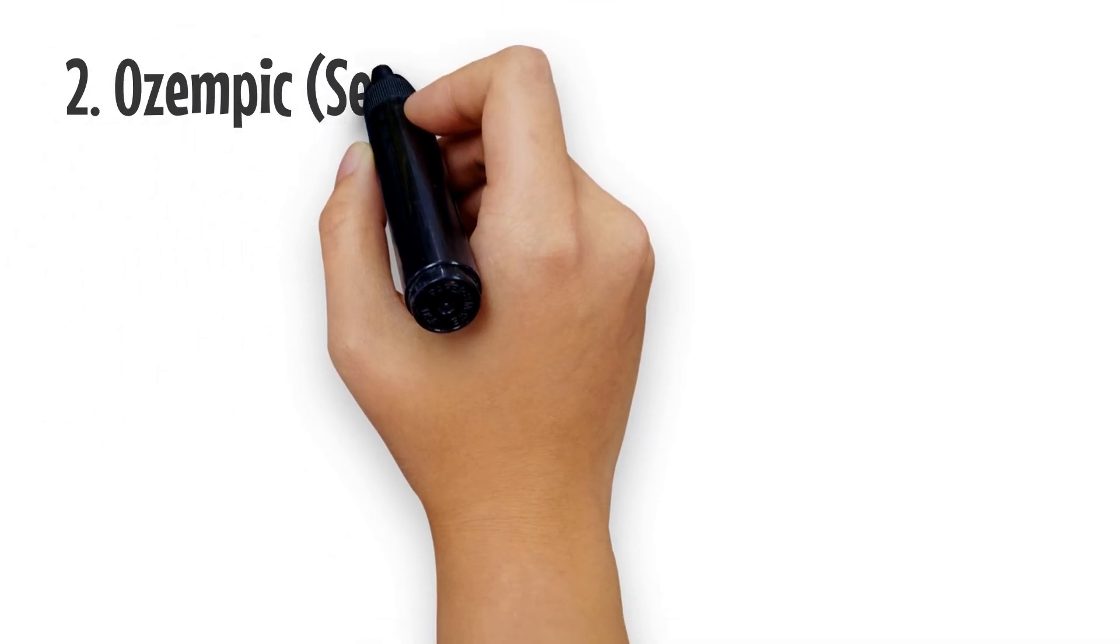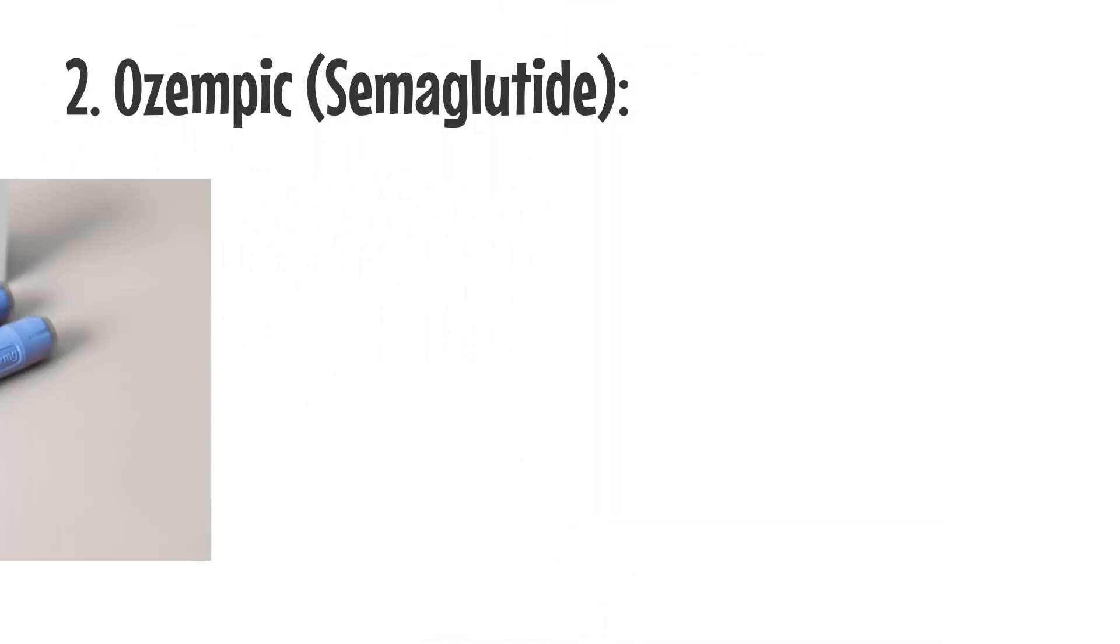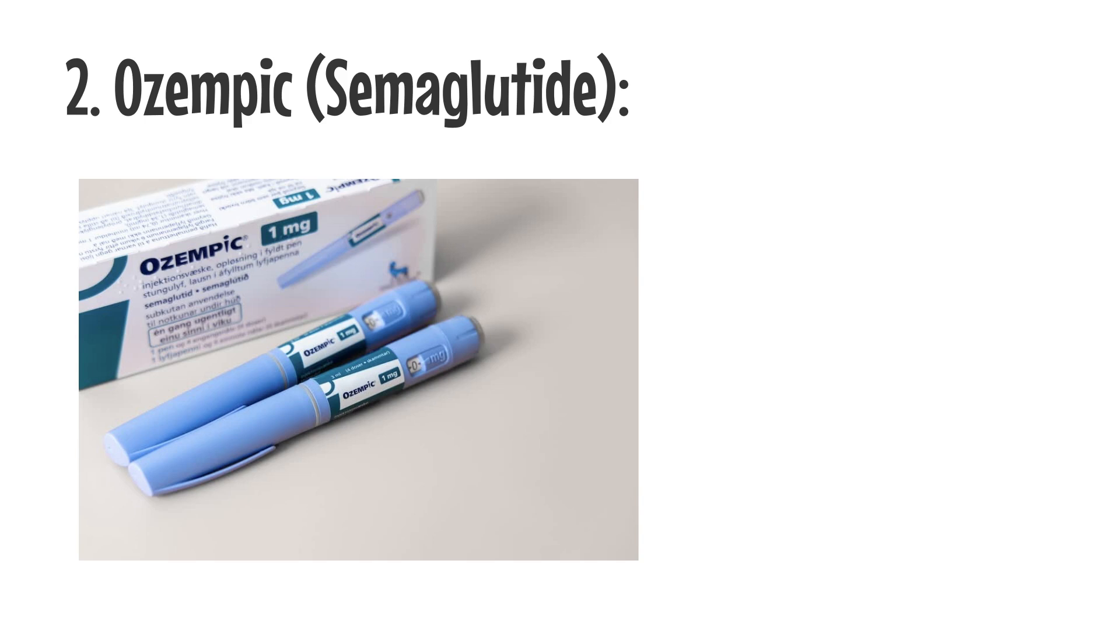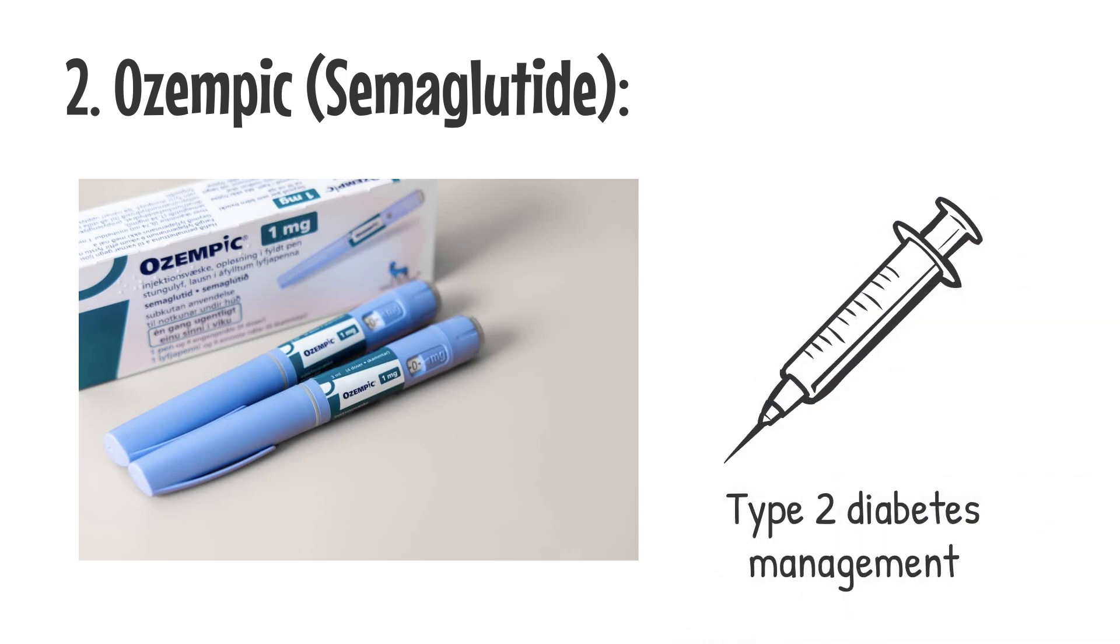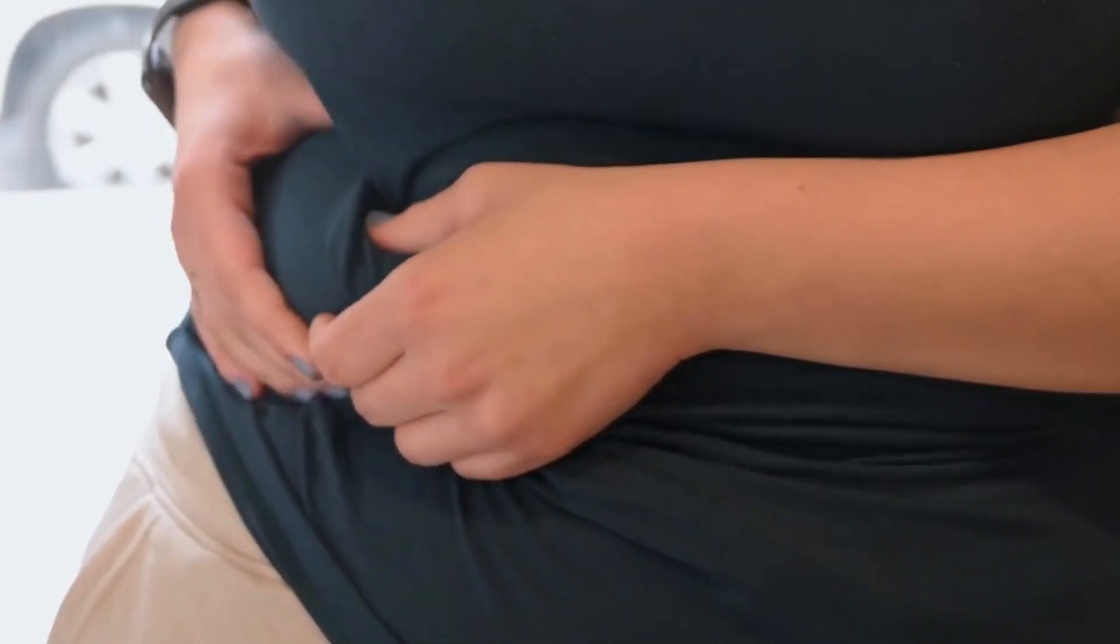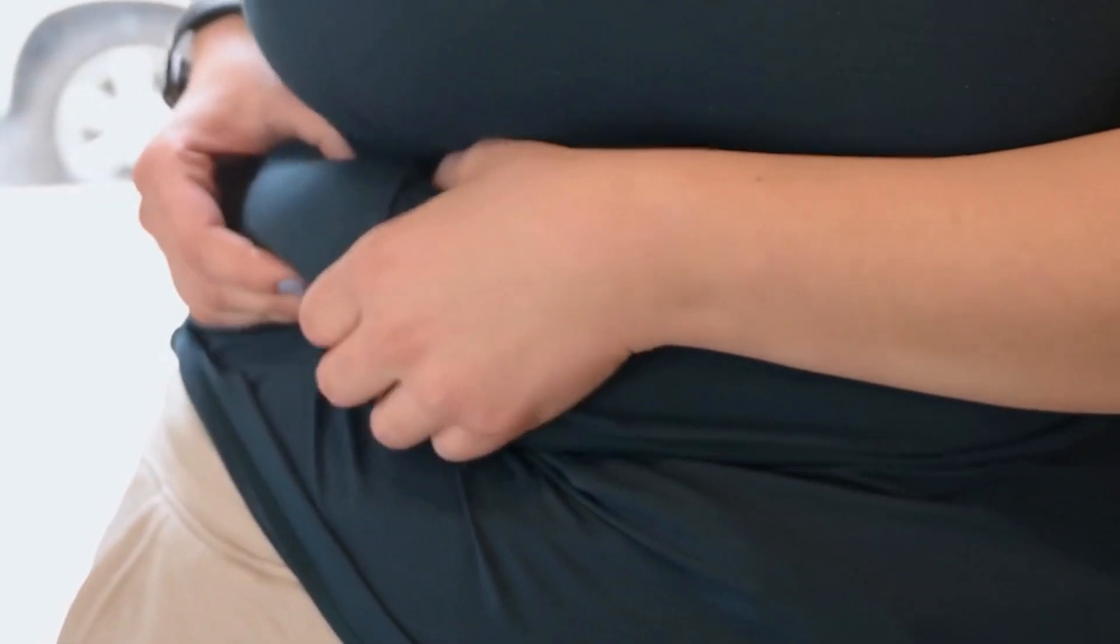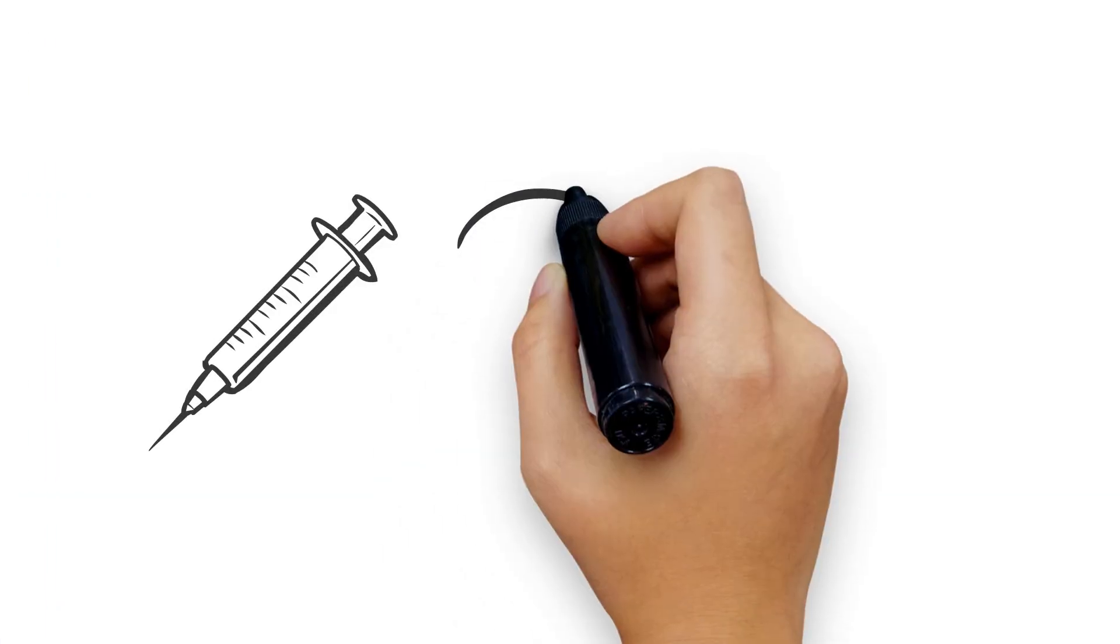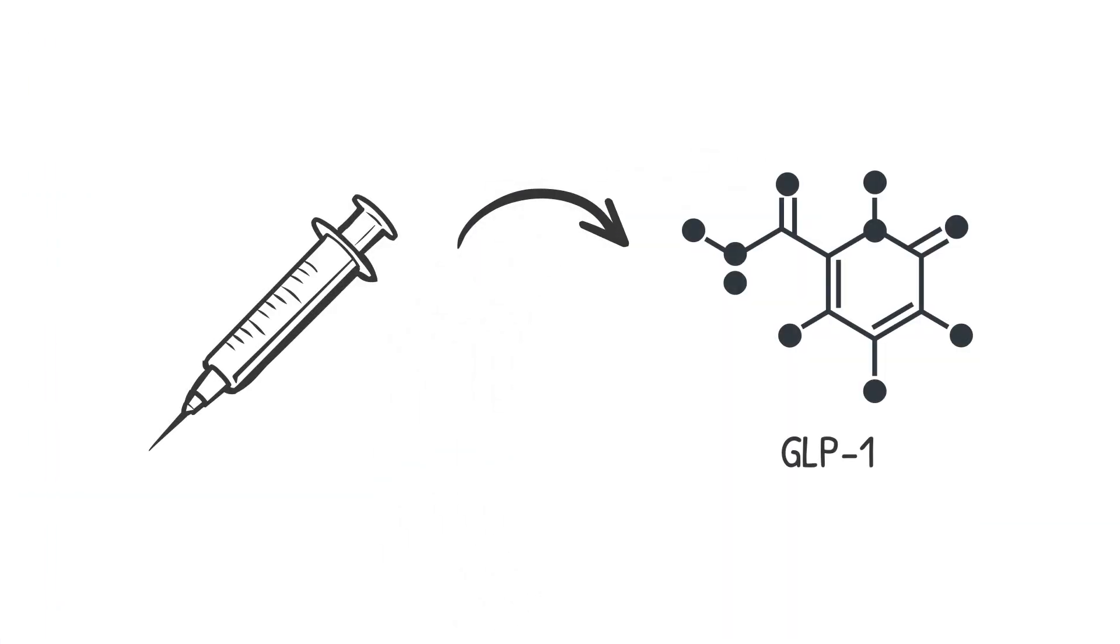Number two is Ozempic, Semaglutide. Ozempic is a GLP-1 receptor agonist primarily used to manage type 2 diabetes, but it has also gained attention for its weight loss benefits. It's designed to mimic the action of GLP-1, a hormone that helps control blood sugar and suppresses appetite.